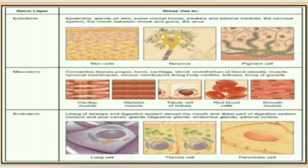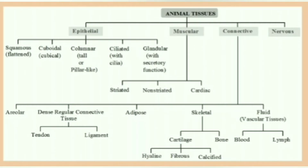The ectoderm forms epidermis, glands on skin, some cranial bones, pituitary, and so on. The mesoderm forms connective tissue proper, bone, cartilage, blood, endothelium of blood vessels, muscles, etc. The endoderm forms lining of airways and the digestive system, except the mouth and distal part, and glands like digestive, endocrine, and adrenal cortex.